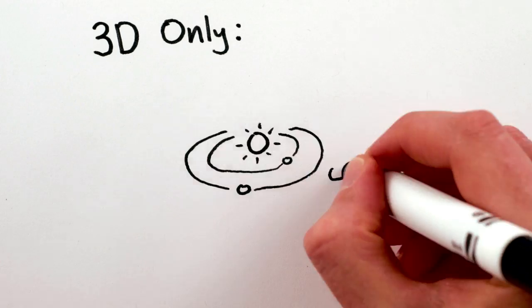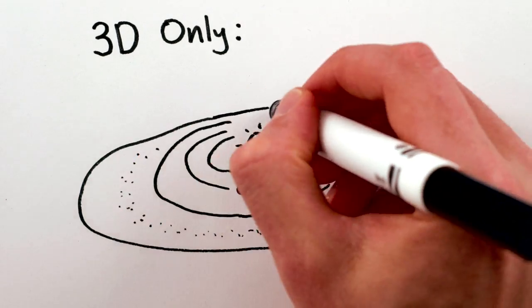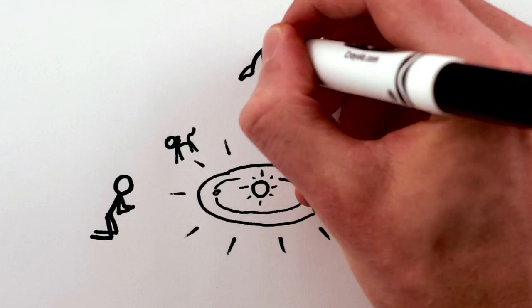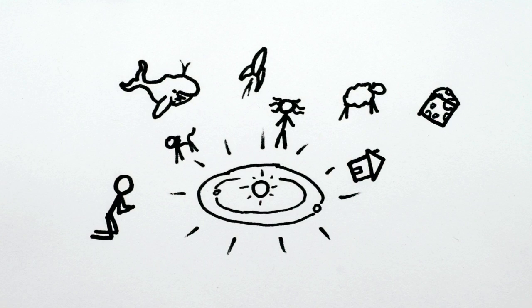So we're incredibly lucky to live in a three-dimensional universe where there are stable orbits that allow planets, solar systems, and galaxies to exist at all. Thank you, stable orbits, for without you, life as we know it, and especially cheese, would be impossible.